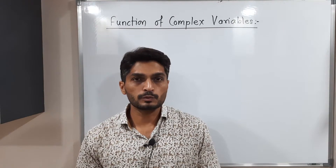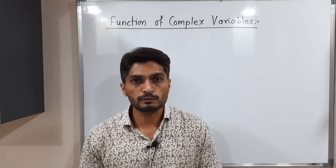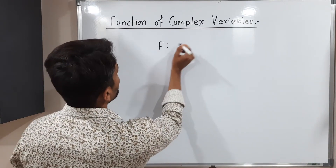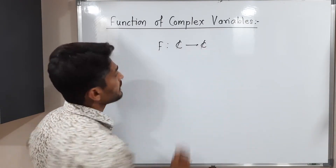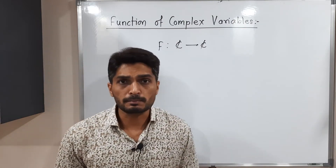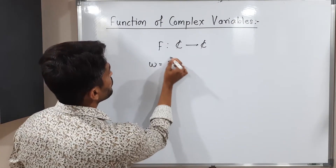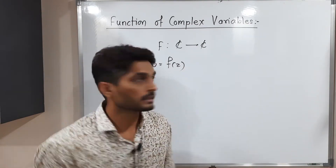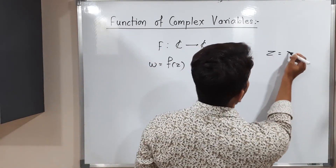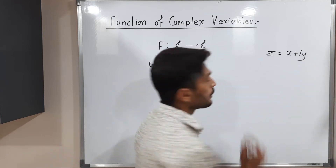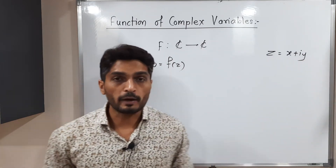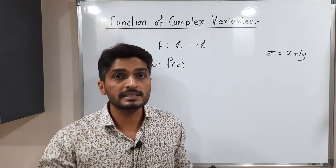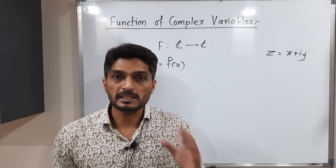Let us discuss this very important concept: complex valued function. It is a function f from ℂ to ℂ — from the set of complex numbers to the set of complex numbers — and we denote it as w = f(z). You know that any complex number z is written as x + iy, where x is the real part of z and y is the imaginary part of z. When we have any complex valued function, we can express it in the same way: real part plus i times imaginary part.